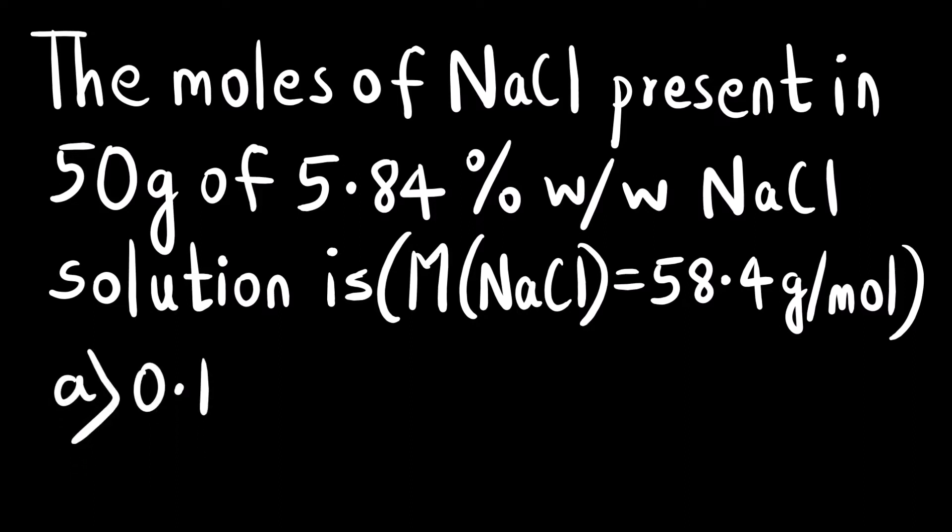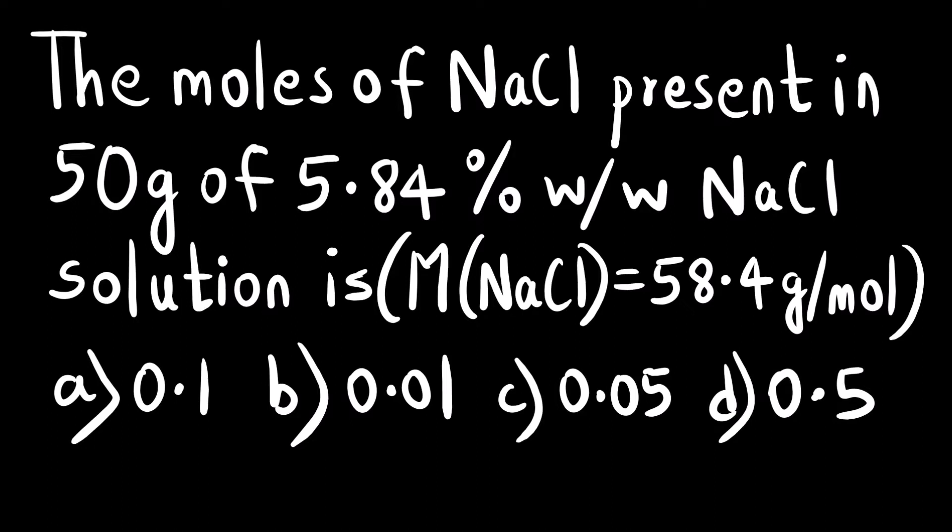Options given are 0.1, 0.01, 0.05, and 0.5. Let us first see the formula for percentage weight by weight that we saw in the last video. Percentage weight by weight is mass of the solute divided by mass of the solution times 100.